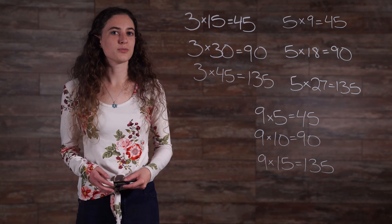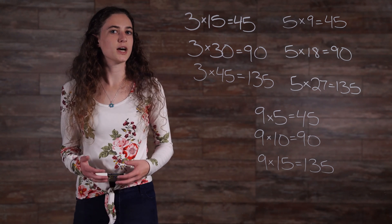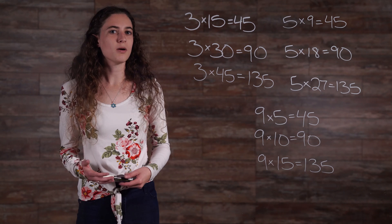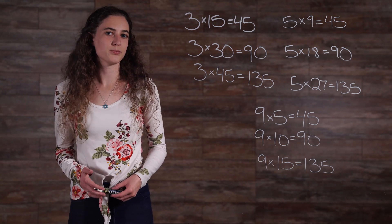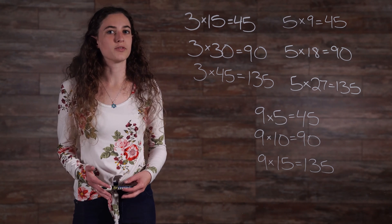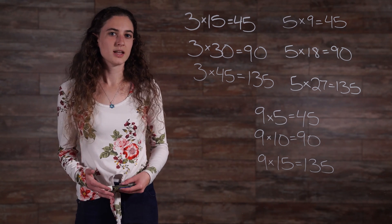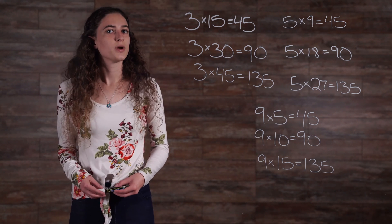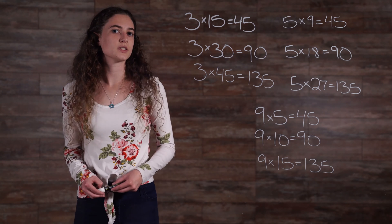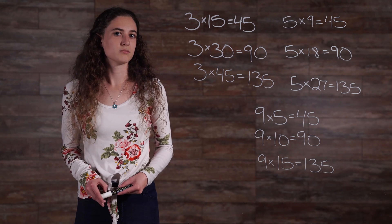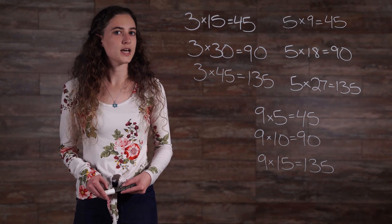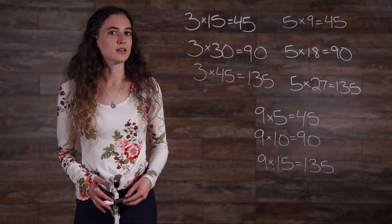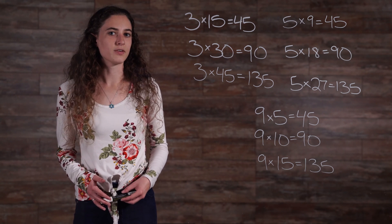Sometimes we need to determine the least common multiple, or the LCM, of a set of numbers — in other words, the common multiple that has the lowest value. This can be done in one of two ways: listing the common multiples and factoring. The LCM of 4 and 10 is 20, while the LCM of 3, 5, and 9 is 45.